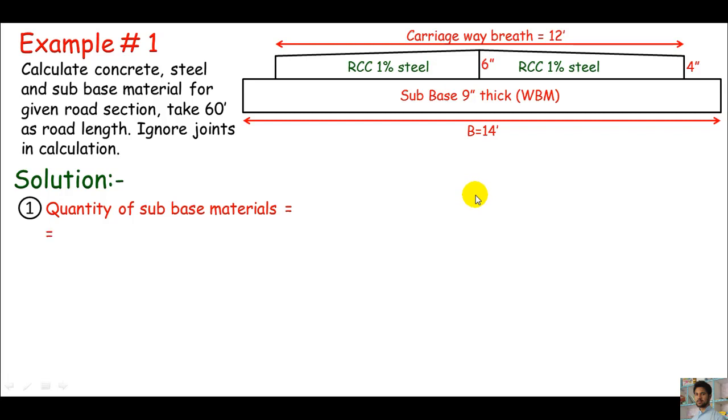This is a uniform rectangular prism. Length times breadth times thickness or depth must be the quantity. I can write this in short form: L × B × d.